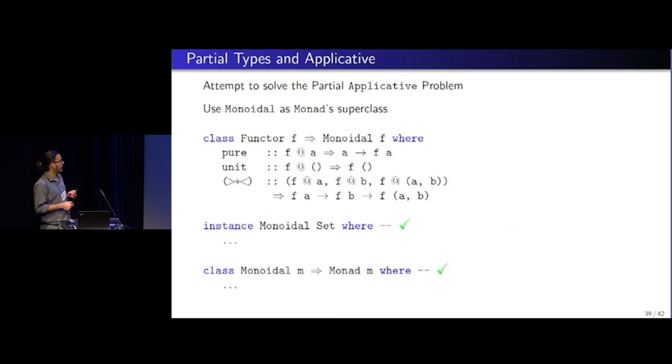It seems that there is a long-lost cousin of applicative called Monoidal, which is equally expressive as applicative in Haskell. And this seems to do its job pretty well. We can now, so Monoidal has two functions, unit and bowtie, which are pretty simple. And we can now define a Monoidal instance for set, and it type checks. Monad can then have a super class of Monoidal instead of applicative, and everyone is happy.